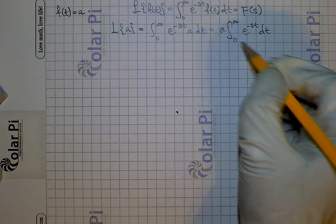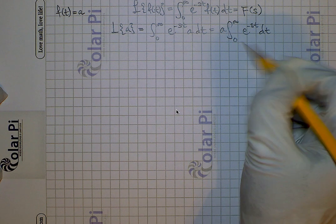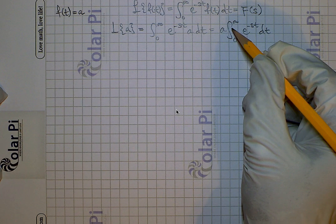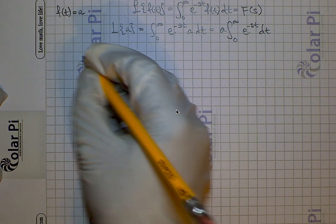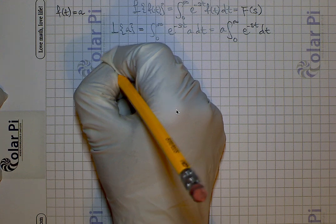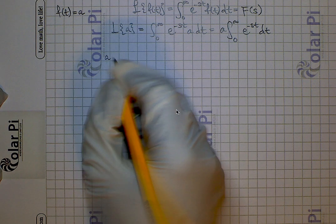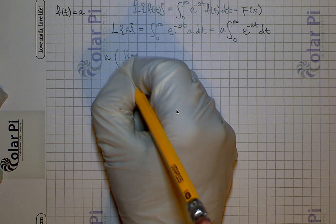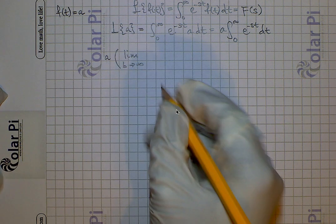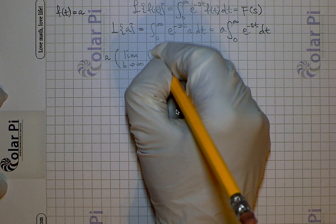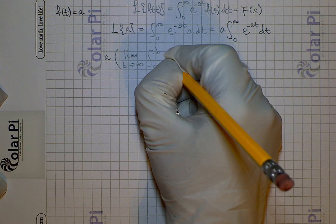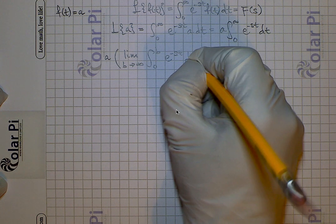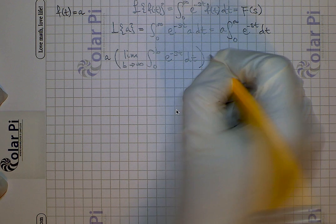Now this antiderivative is pretty simple, but since we're dealing with an improper integral we need to rewrite the integral in the following way. We have a times the limit as b goes to infinity of the integral from 0 to b of e to the negative st times dt. This is just something you must do every time we have an improper integral.